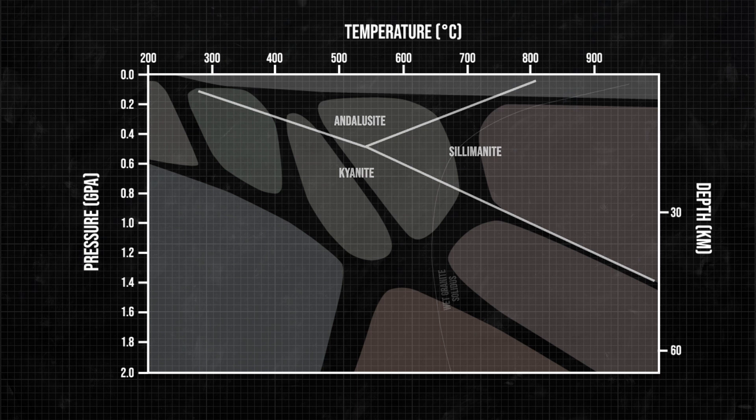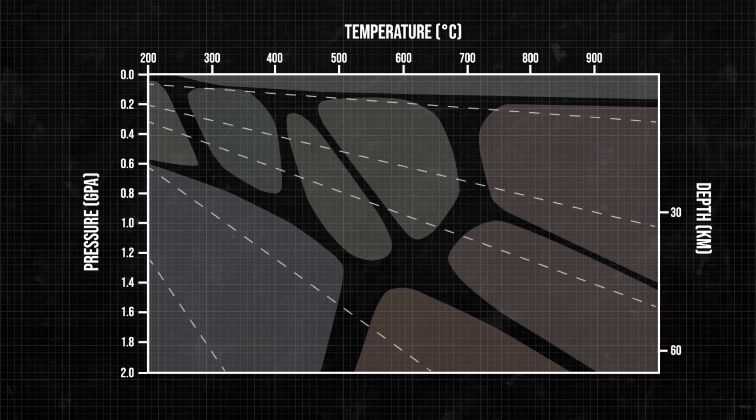The last interesting thing on this diagram are the five pale dashed lines, labeled 5, 10, 20, 30, and 100 degrees centigrade per kilometer. These are five different geothermal gradients and tell you about the geokitchen.